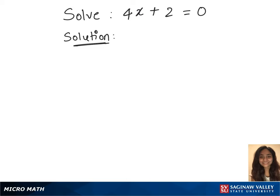To solve the equation 4x plus 2 equals 0, subtract 2 on both sides: 4x plus 2 minus 2 equals minus 2. The plus 2 and minus 2 cancel out, giving us 4x equals minus 2.